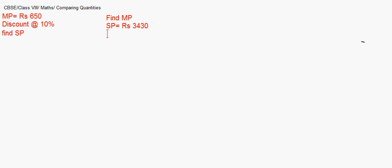This is one of the very basic question types. It might change: instead of finding the selling price, you may have to find the marked price. The selling price is given as, say, ₹3430, and a discount is offered at 2%. As you learned in the reverse percentage question, you can find: SP × 100 / (100 − discount).